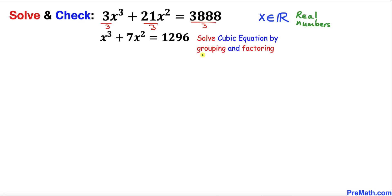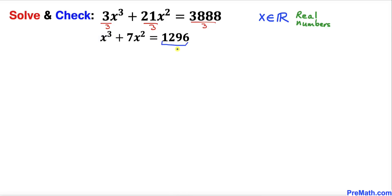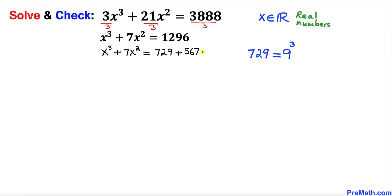Now we are going to solve it by grouping and factoring. If we focus on the left hand side, this part is cubic. So we are going to manipulate 1296 into two numbers: 729 plus 567, such that 729 can be written as 9³. So the equation becomes x³ + 7x² = 9³ + 567.